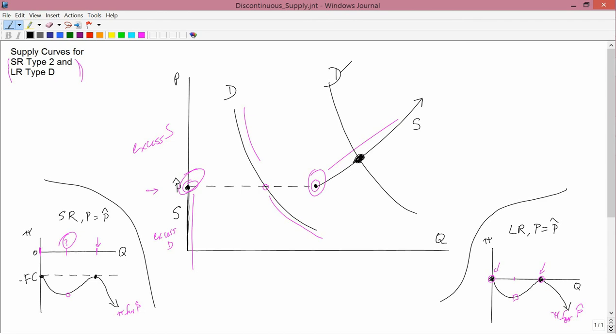If the demand curve doesn't fall in the gap, then there's no problem, and you have a price that's above p-hat, and you get equilibrium. Similarly, if demand is really low, like down here, call it D double prime, then you have a perfectly good equilibrium where quantity is equal to zero.